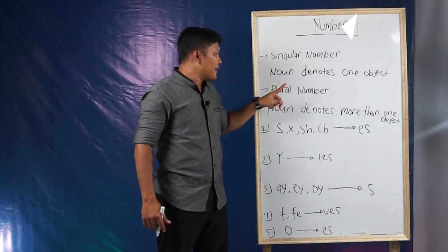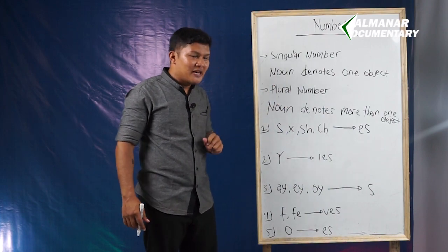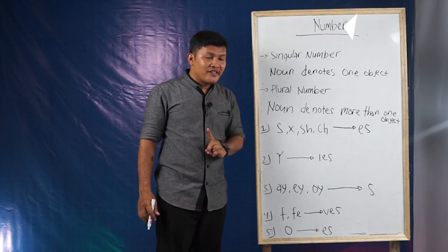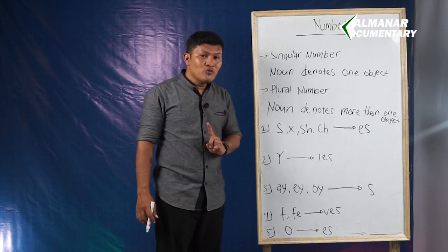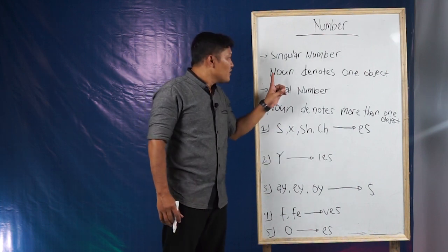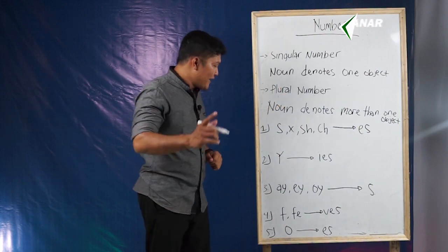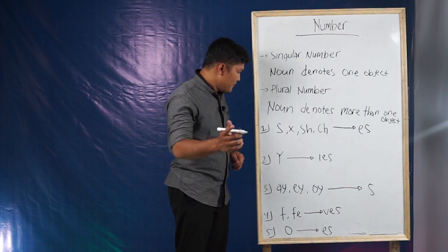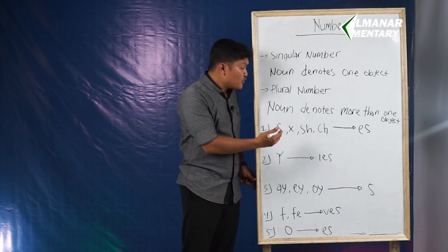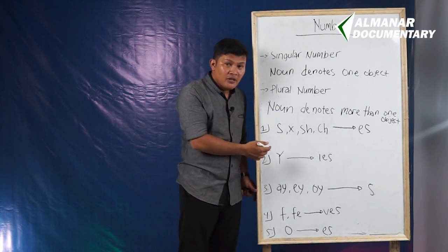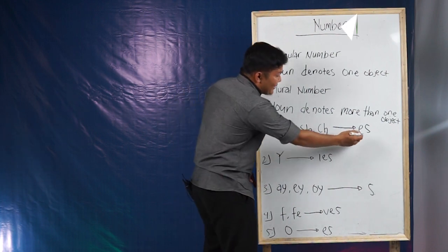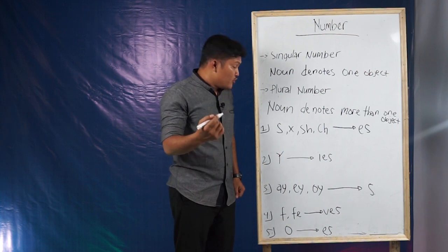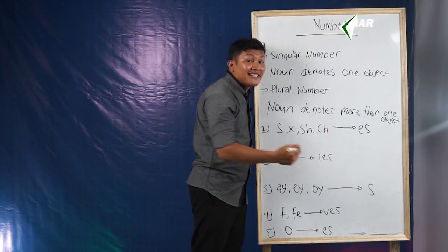Now we are going to learn about how to form the plural number. The first rule: if the singular number ends in S and you want to put it into plural number, you just need to add ES. For example, 'glass' — you just need to add ES to make 'glasses'.